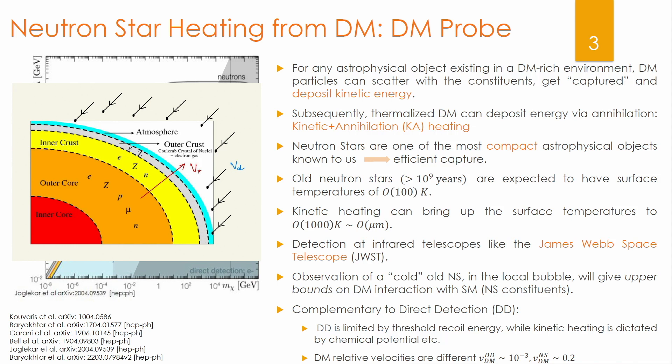These constraints are complementary to direct detection constraints because the same process is being probed: dark matter scattering off a standard model particle. This is complementary because direct detection processes are limited by the threshold recoil energy of the detector, while kinetic heating is dictated by the chemical potential. Also, the dark matter relative velocity with the target differs: in direct detection it is the halo velocity of order 10^-3 c, while in neutron stars these are semi-relativistic velocities. Here I show a schematic of dark matter infalling into a neutron star, where the neutron star itself moves with velocity V_star.